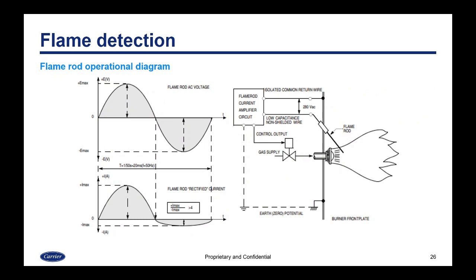Here's an operational diagram for the flame rod. In the image on the left, you can see the normal AC sine wave at the top and how the peaks are equally distant. At the bottom you can see the rectified current — the peak on one half of the AC cycle is about four times higher than the other, and that is how it can differentiate between a short and an actual flame signal. The image on the right shows the circuit and how it manifests into actually detecting the flame, showing the flame rod protruding into the flame itself.